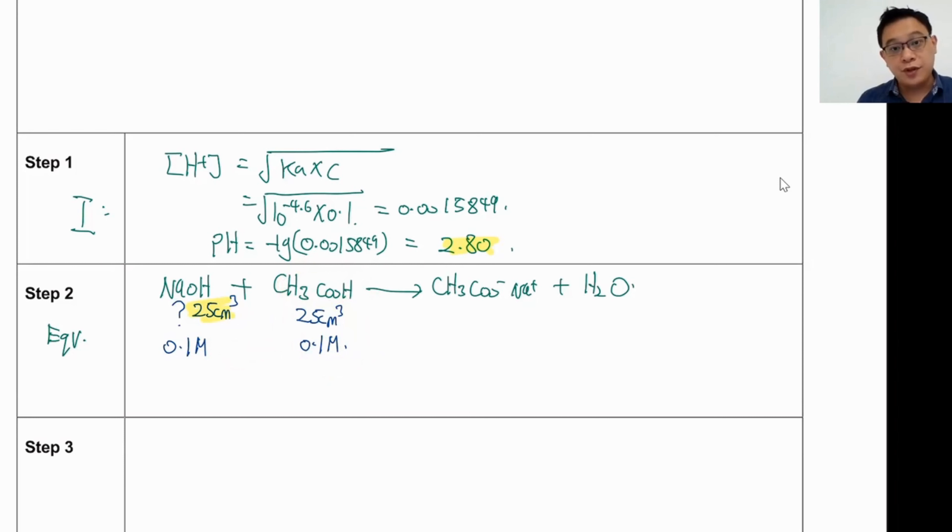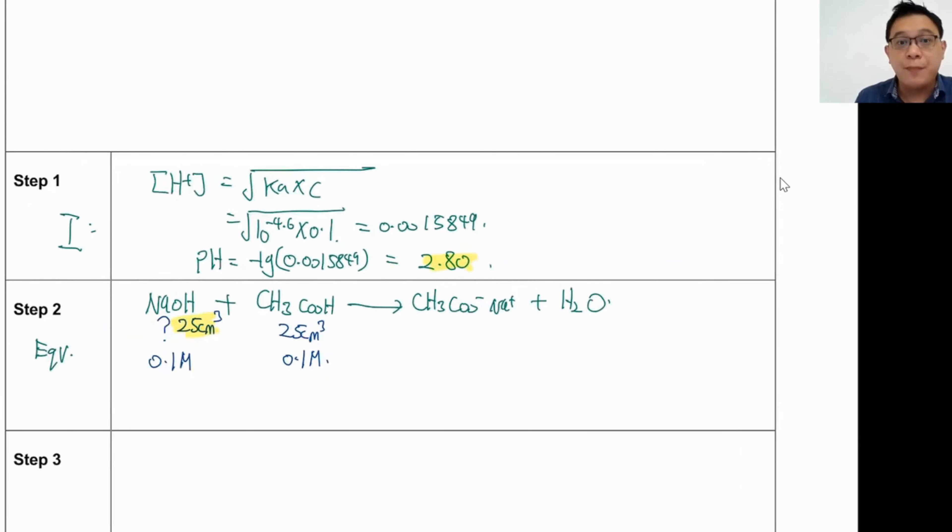But in titration, we have an x and a y axis. So I also need to determine the y axis. Now, the y axis has two different methods of solving. I will show you the two methods. I will show you the easy method, which is acceptable in A-Level. So this is the first method, the pH, right?